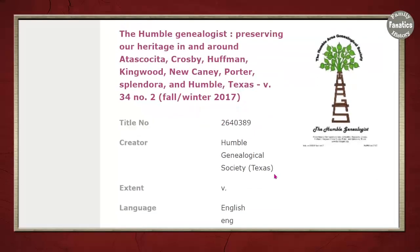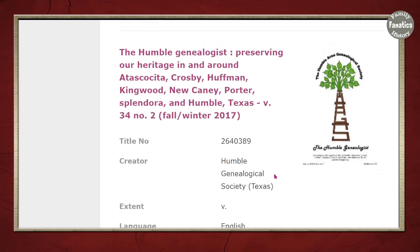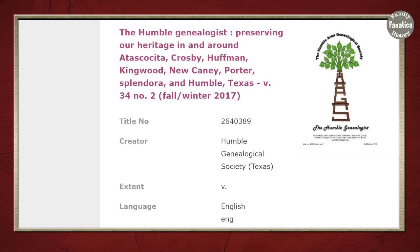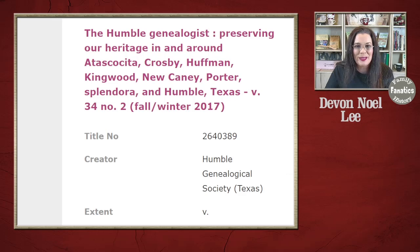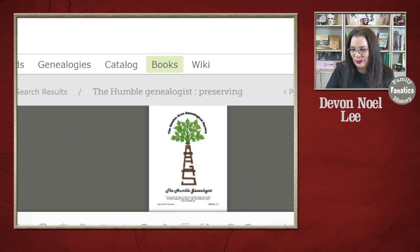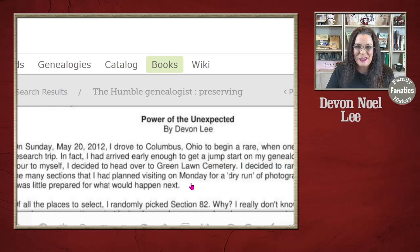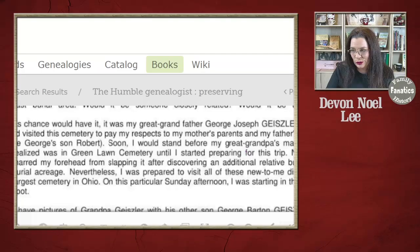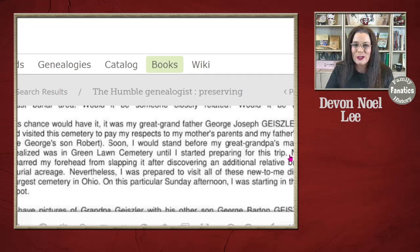This one was one I hadn't expected to find. I belong to the local genealogical society in Umble, and they recently digitized all of their newspapers and submitted them to FamilySearch. When I clicked through to the newsletter, it brought me to a page where I found my result of Geisler — an article I had written about my Geisler, George Joseph Geisler, and visiting his cemetery plot. So don't just limit yourself to books; there will be journals as well. This was a fun discovery.